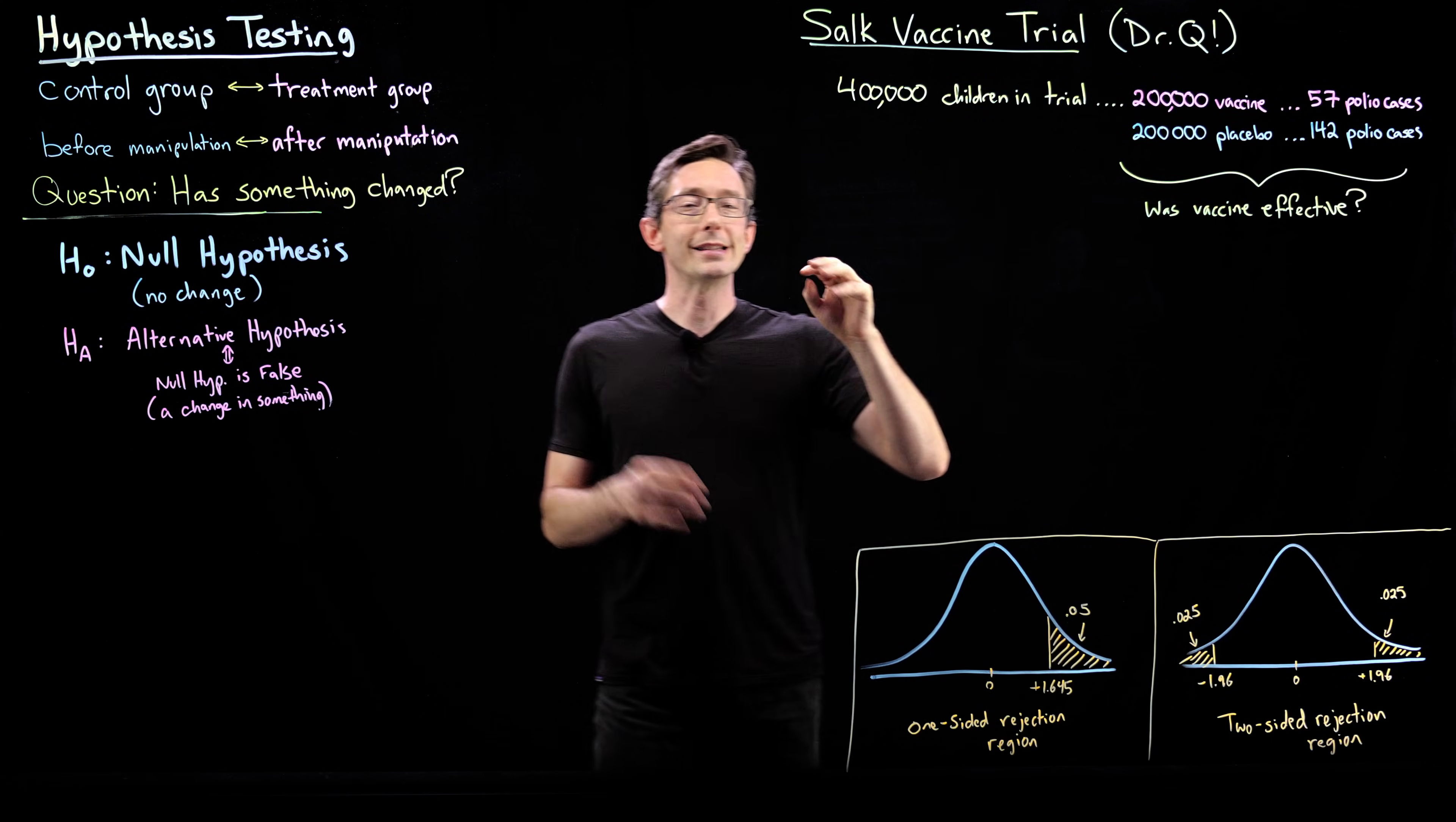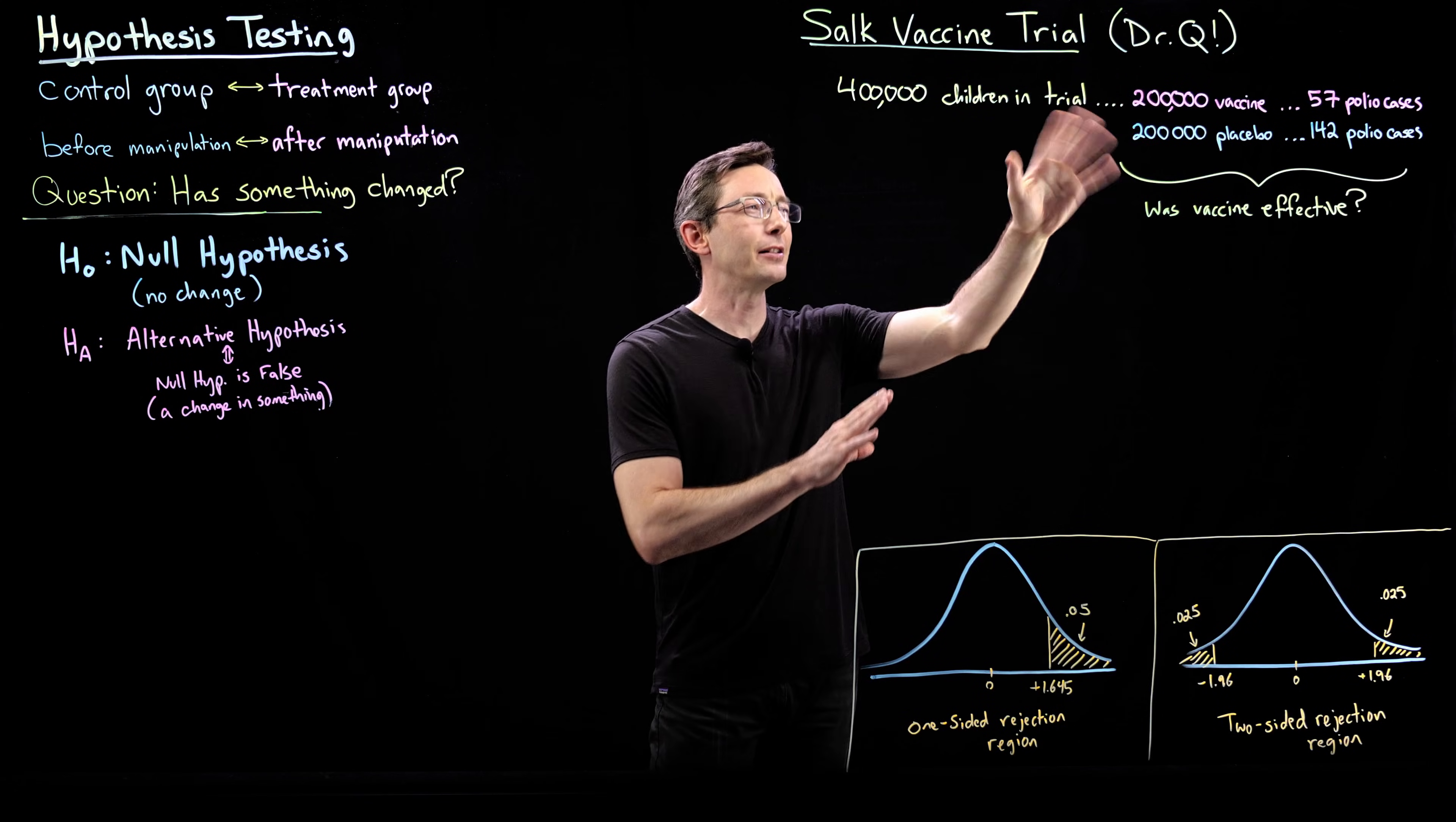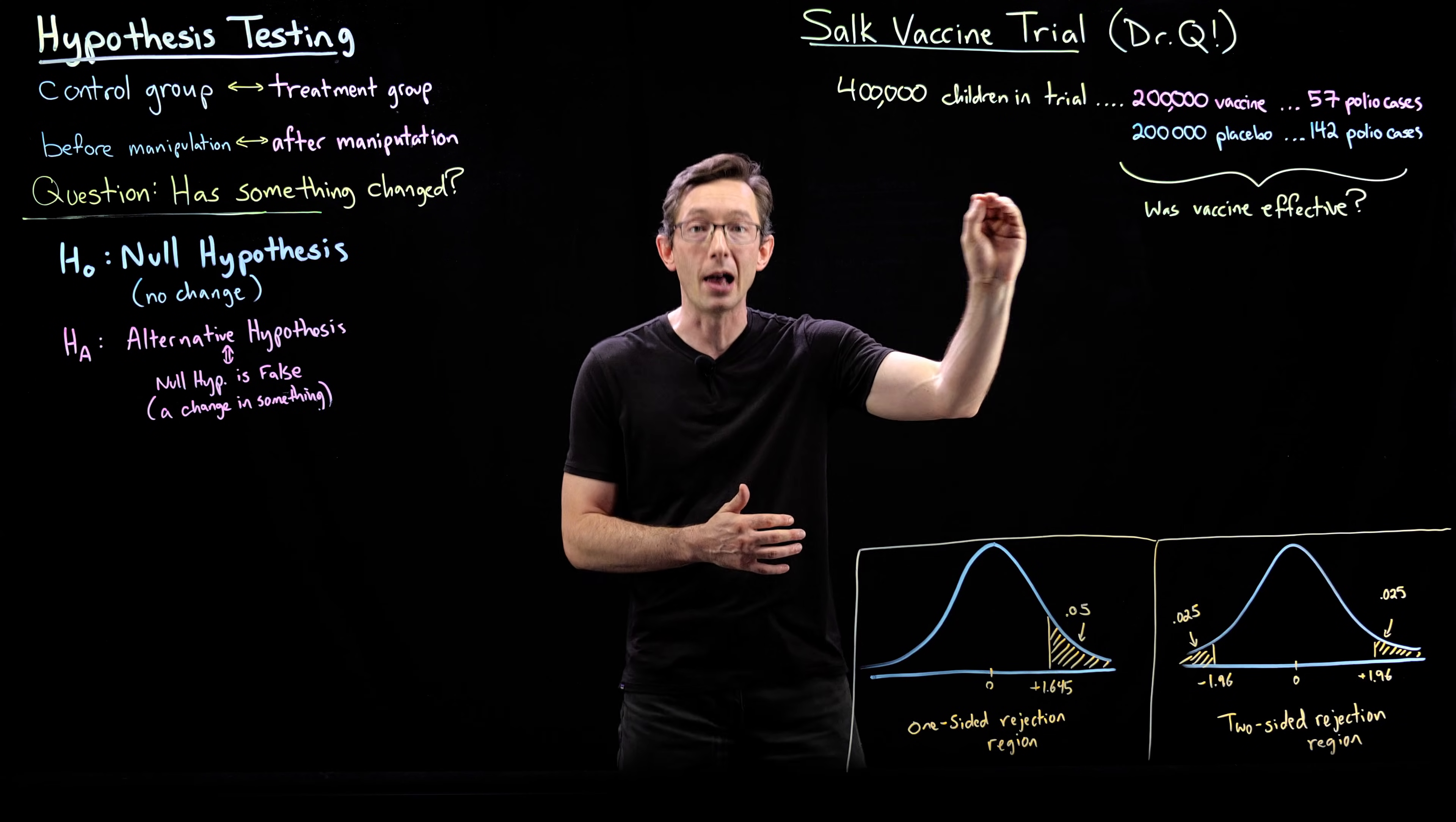So the first one I'm going to do is this Salk vaccine trial for the polio vaccine. Polio was kind of a devastating disease in the 1950s. And around 1954, 55, this new polio vaccine was developed and tested in a mass clinical trial. So 400,000 children in this trial. I'm kind of massaging a tiny bit to make this a little easier. But let's assume that there is about 400,000 children in the trial.